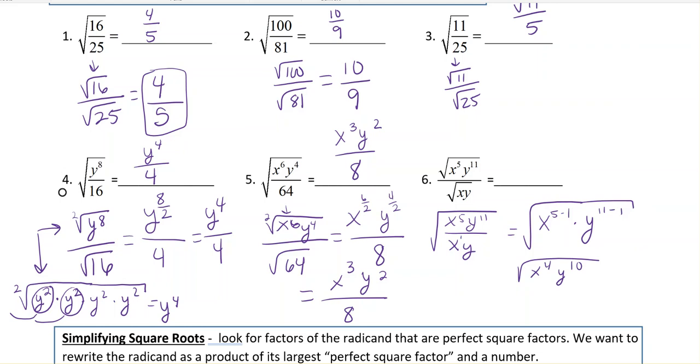Now I can do division or simplifying radicals, whatever works for me. It would be x to the 4th divided by 2, which is x squared, and y to the 10th divided by 2, which is y to the 5th.